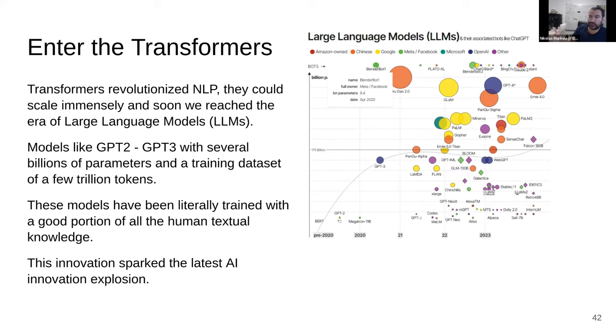Models like GPT-2, GPT-3 have several billions of parameters, where in CNNs we're talking about a few million at most, and their training dataset is a few trillion tokens. These models have literally trained with a good portion of all human textual information, knowledge, and this is what sparked this AI innovation. It didn't start now, it didn't start in 22 or 23, it started in 2019. We just needed the best applications to come up.